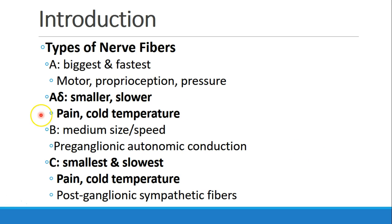Skipping over A-delta for a moment, the B fibers are medium-size and medium-speed, and are typically found in the autonomic nervous system in the preganglionic axons. Type C fibers are the smallest and the slowest. They transmit pain and cold temperature, as well as some postganglionic sympathetic fibers. The A-delta fibers are similar to the C fibers in that they are small and slow, and also transmit pain and cold temperature.